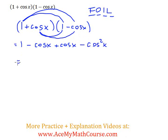Great. So now what do we do? Well, negative cos plus cos is 0, so they cancel out. And we're left with 1 minus cos squared x.